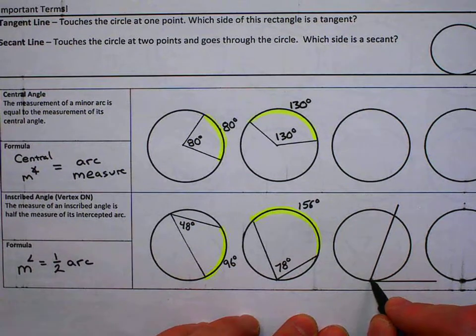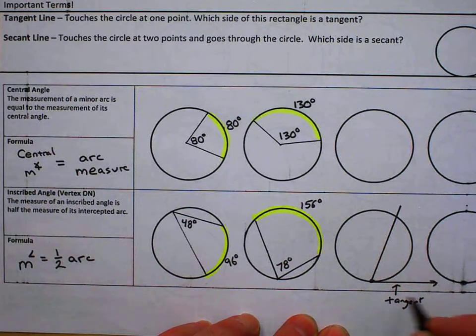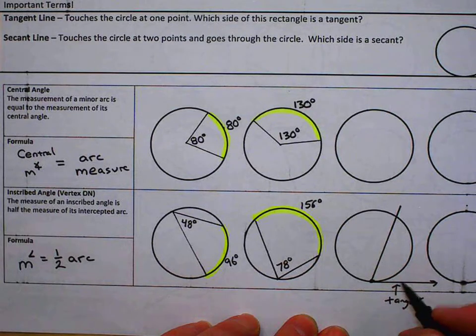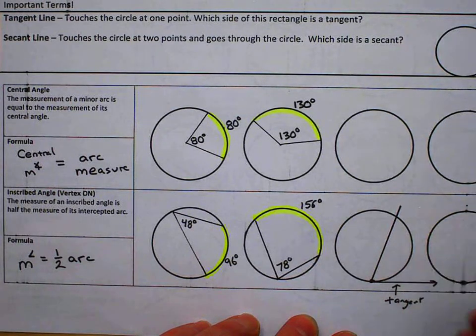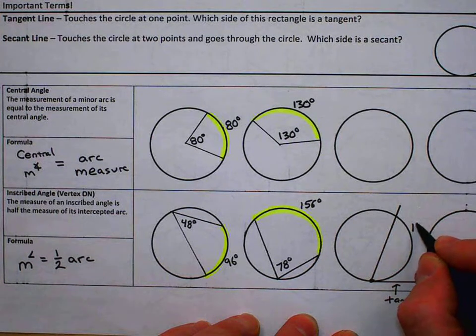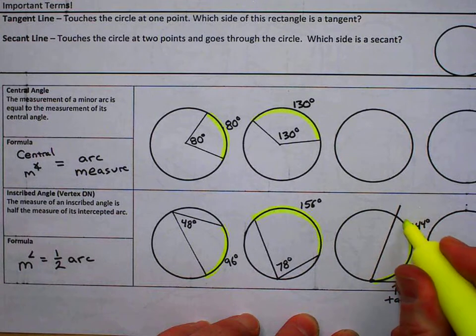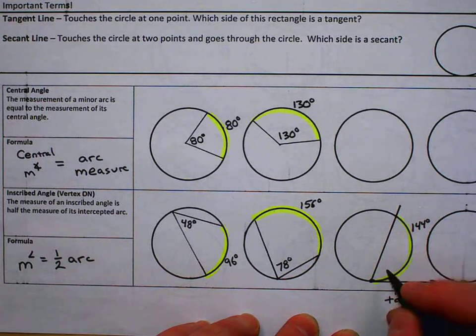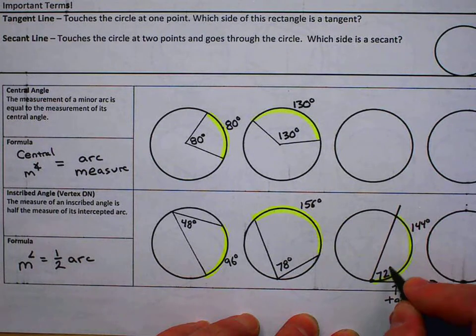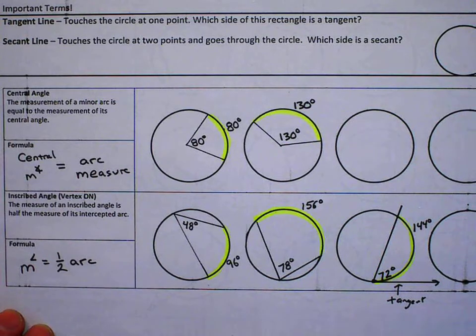If this was a tangent and you have an intercepted arc here, if we were told one or the other—if I was told that this arc is 144 degrees, then I know this angle is half of that, 72 degrees. So that's a possibility using this measure of one half arc. It's all about the vertex being on the circle.